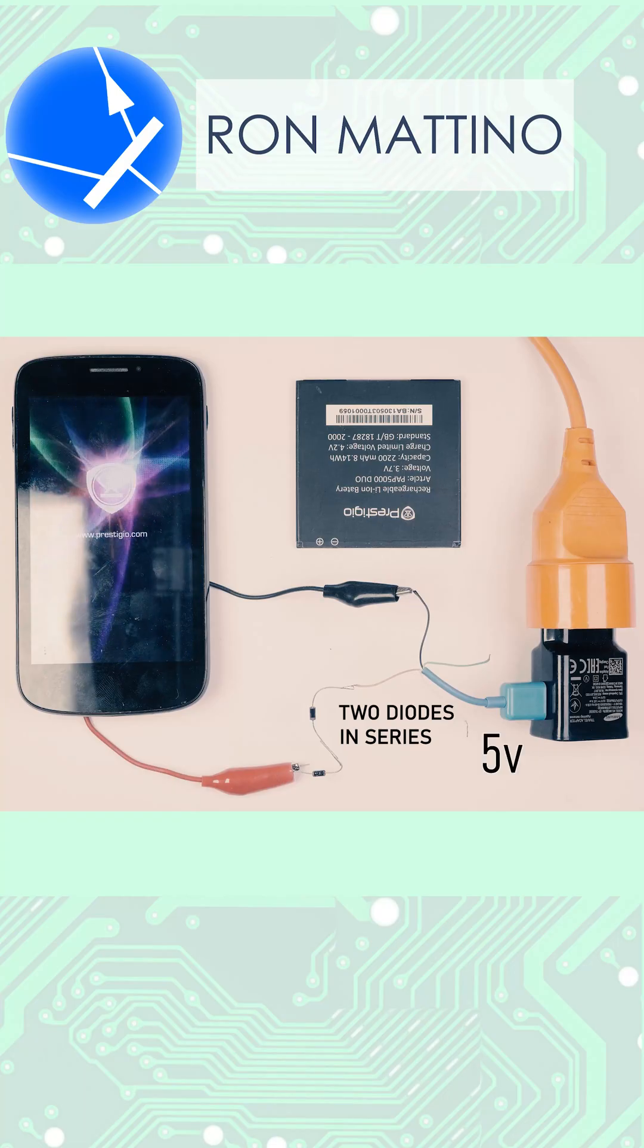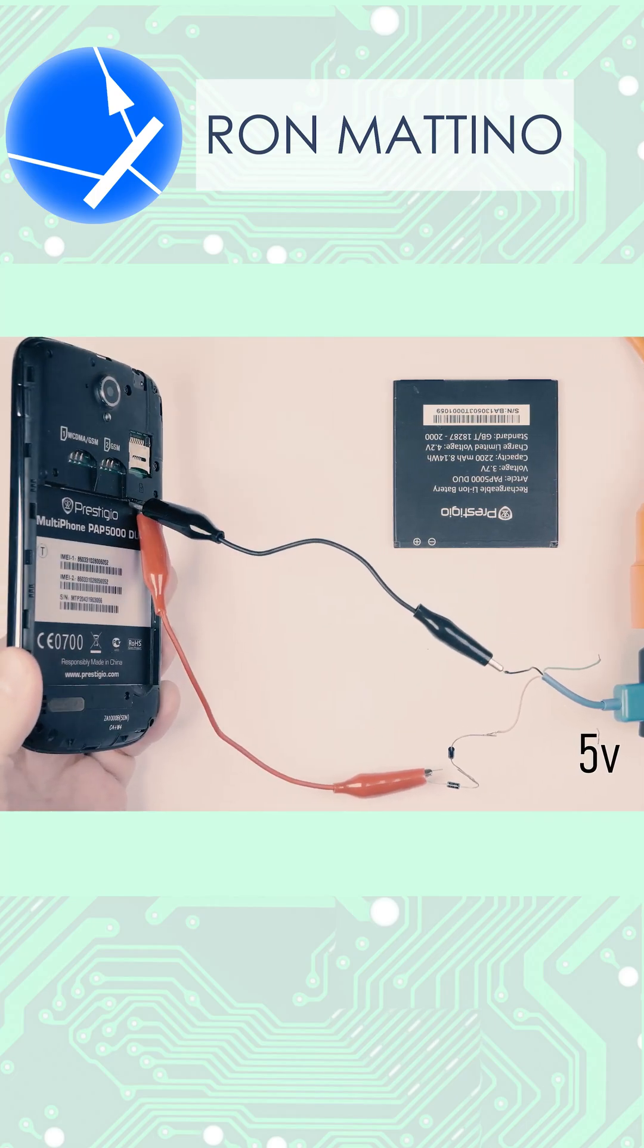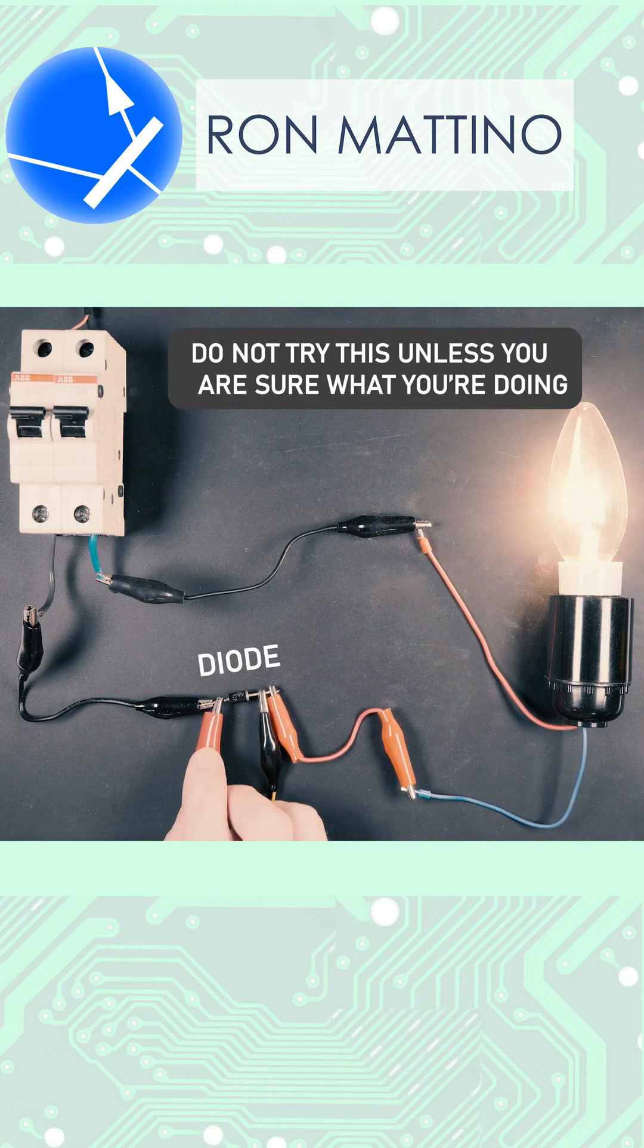This circuit powers the smartphone from a 5V supply. You can also use a diode to make a 220V light bulb glow dimmer.